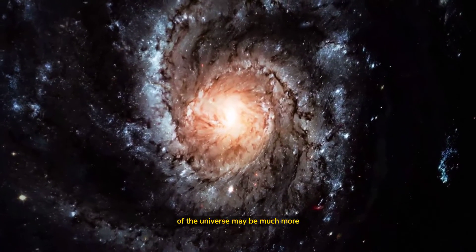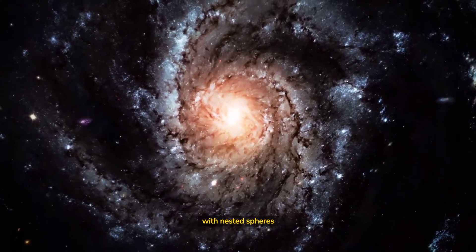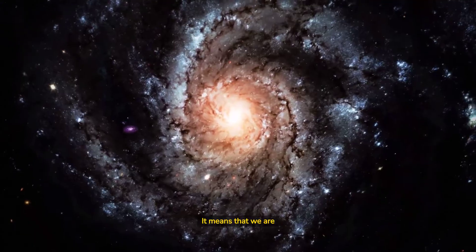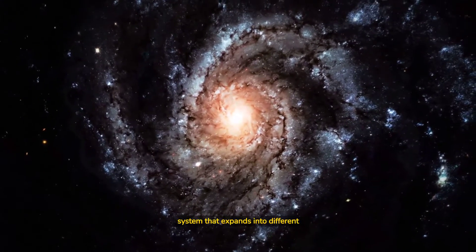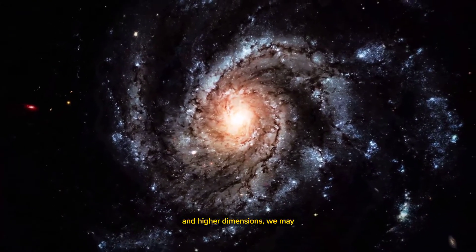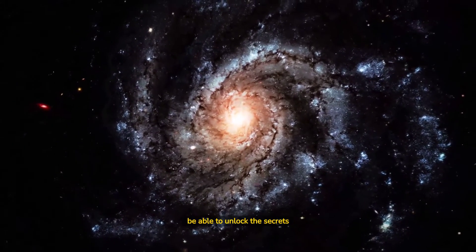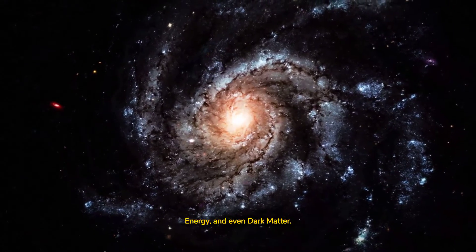So, that means the shape of the universe may be much more complex than we ever imagined, with nested spheres representing higher dimensions. It means that we are potentially living in a beautifully ordered system that expands into different dimensions above. By understanding the nested hyperspheres and higher dimensions, we may be able to unlock the secrets of the origins of our universe, black holes, dark energy, and even dark matter.